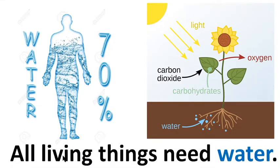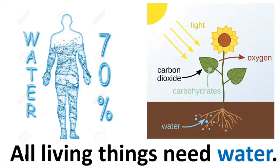All living things need water. In the first picture we can see that there is water in the human body — about 70 percent water in the human body. In the second picture, water is absorbed by the roots of the tree. Human beings are living beings and plants are also living beings — all living things need water.